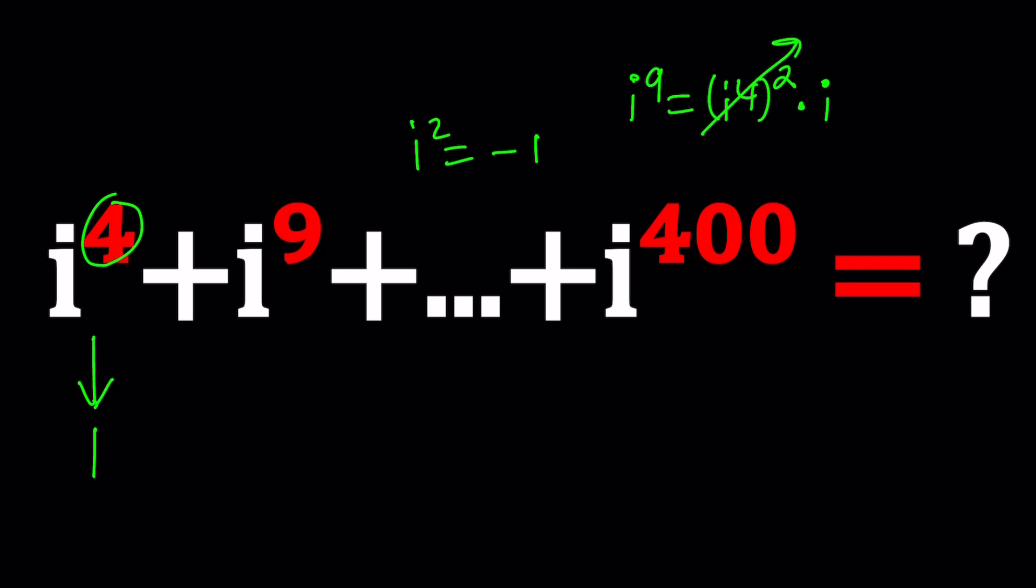Since i to the fourth is 1, this is always going to be i to the first or just i. So from the first two terms, we're getting 1 plus i.